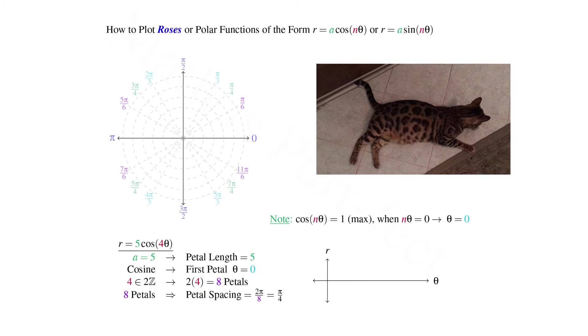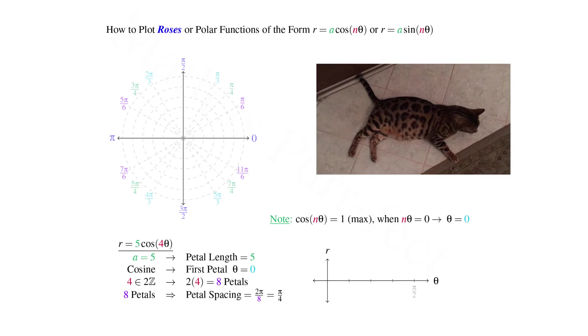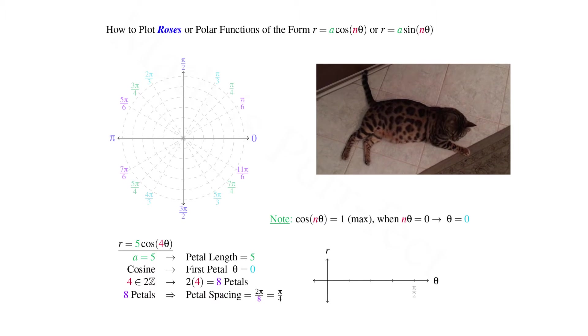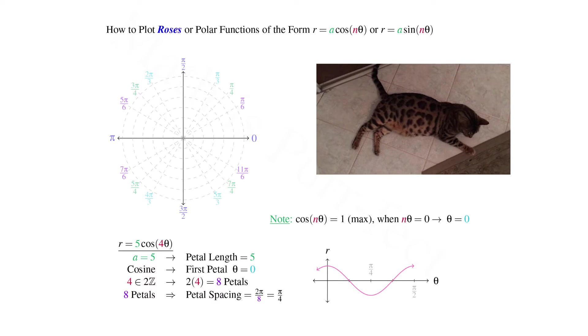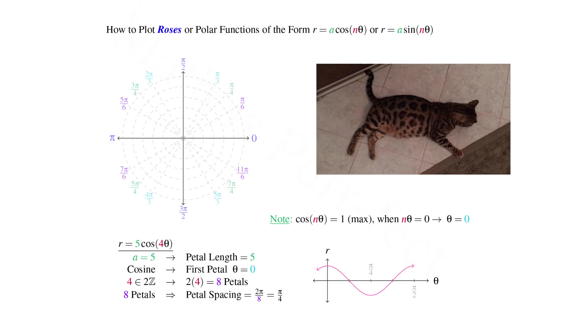Once again, let's consider the plot of this function in Cartesian coordinates. We note that the period for this function is 2π/4, or π/2 radians. Hence we trace one full period of cosine within π/2 radians of measure.